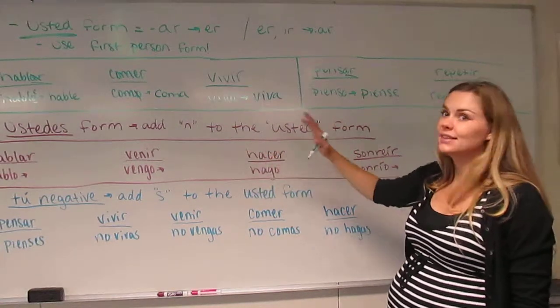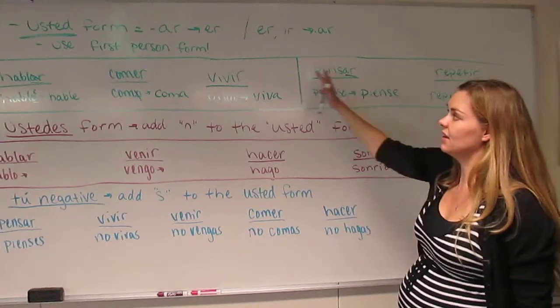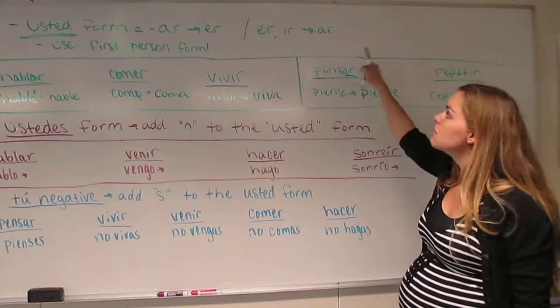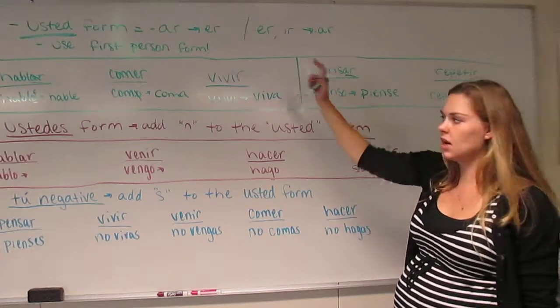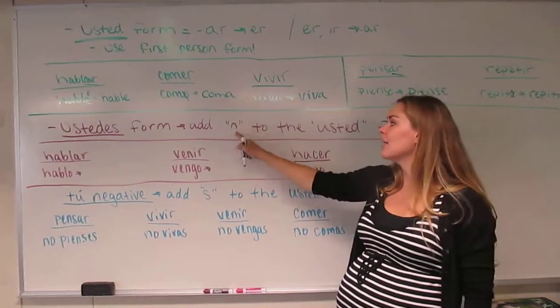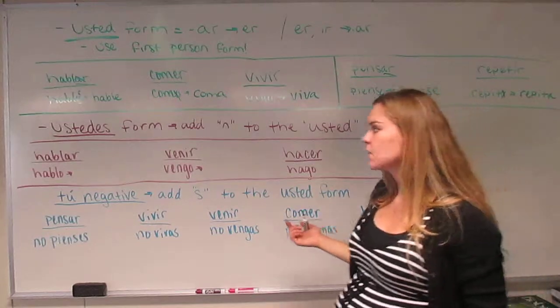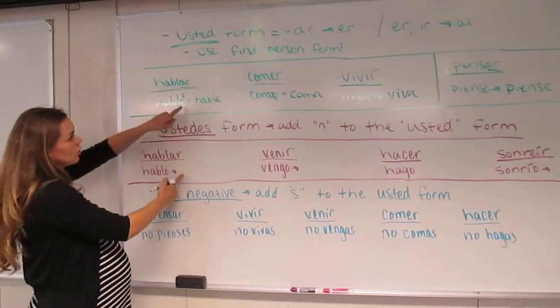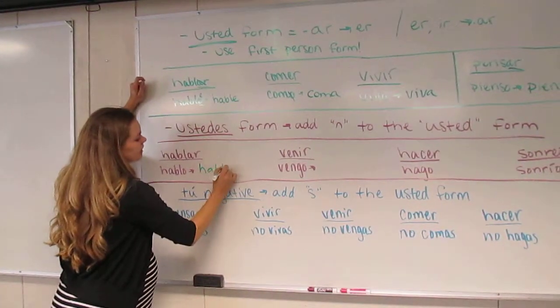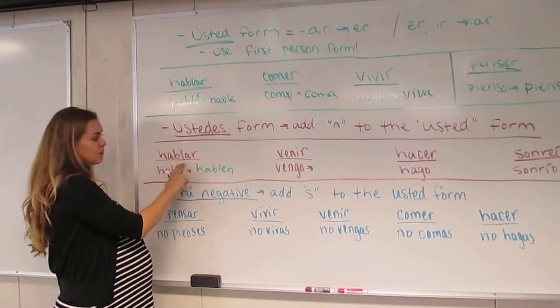Let's look at the ustedes form. It doesn't get much more difficult than the usted form. As long as you all lock in this idea and know the usted form, you will be successful with the ustedes and tú negative forms. But you must remember this formula up here. All you're going to do for the ustedes form is take what you have done with the usted form and add an N to it. Just how we say habla, hablan, to make it plural, that's what you're doing in this case. So hablar, again, if we look up here, we're going to change it. We already have hable, so we know that all we need to do is change it to hablen.